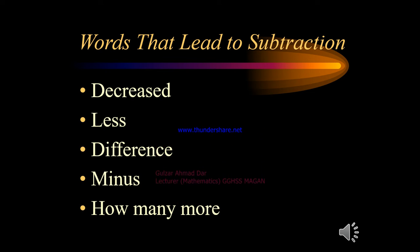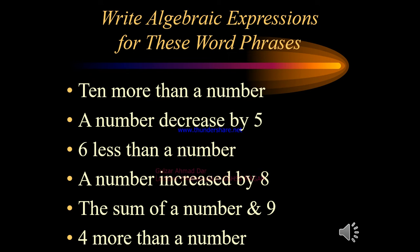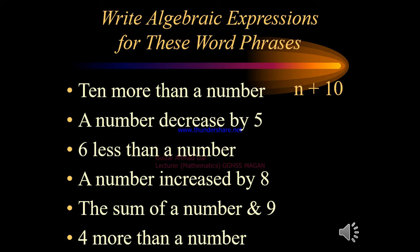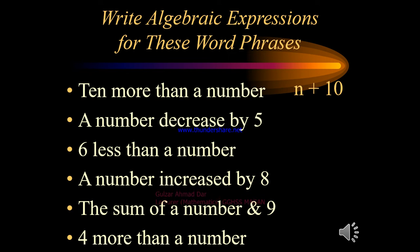Let's see how these words translate into algebraic expressions. 'Ten more than a number': representing the number by n gives n plus 10, since 'more than' indicates addition. 'A number decreased by 5': representing the number by x gives x minus 5, since 'decreased by' indicates subtraction.